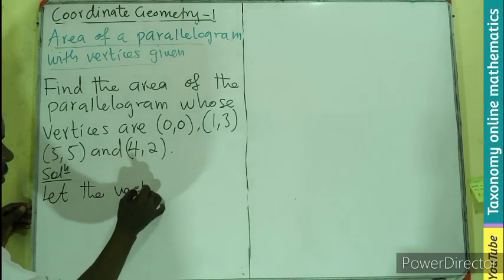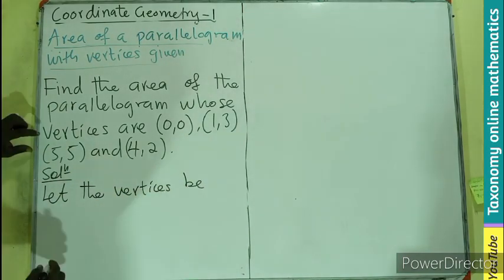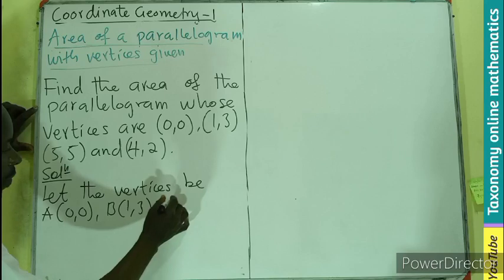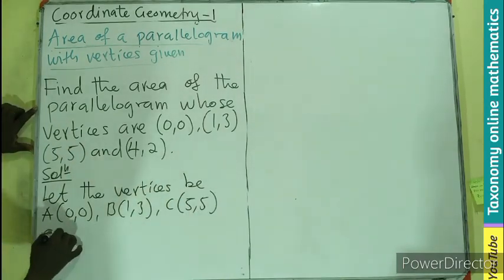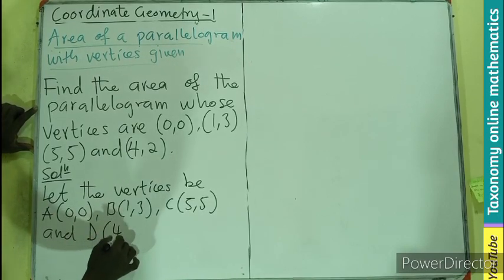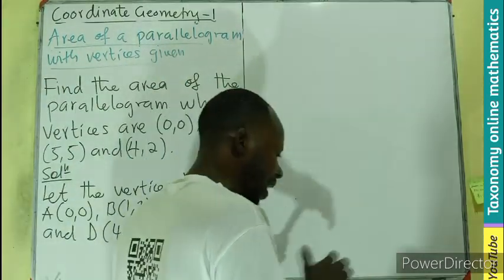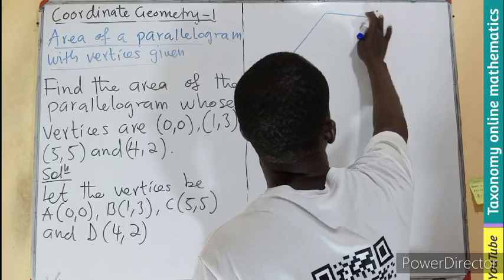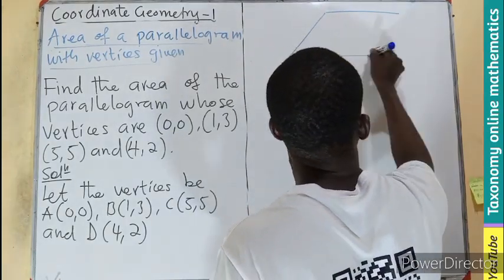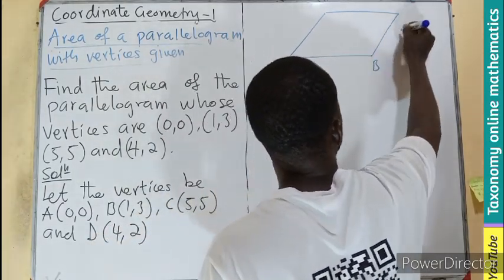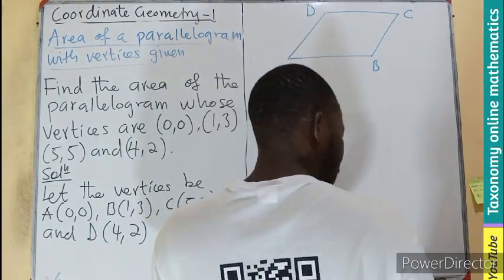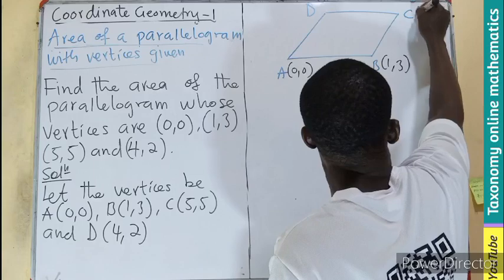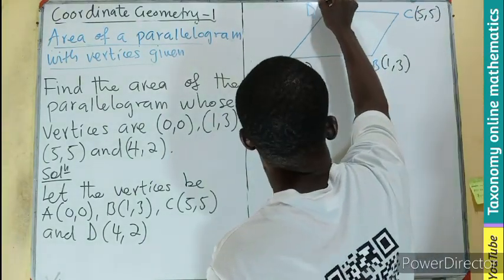Let's pick A to be the first vertex at (0,0), B to be (1,3), C to be (5,5), and let's use D to be (4,2). Let's make a sketch with vertices A, B, C, D being (0,0), (1,3), (5,5), and (4,2).